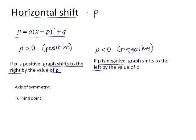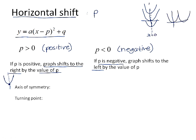When we shift a graph left and right, some of the features associated with that graph also move. The axis of symmetry is the vertical line that goes through the turning point and cuts the graph in half. If we move a graph up or down, the axis of symmetry doesn't change — it remains the y-axis, which is x equals 0. But the moment we shift the graph left and right, we shift the axis of symmetry along with the graph by whatever the p value is. So the equation of the axis of symmetry is the line x equals p.